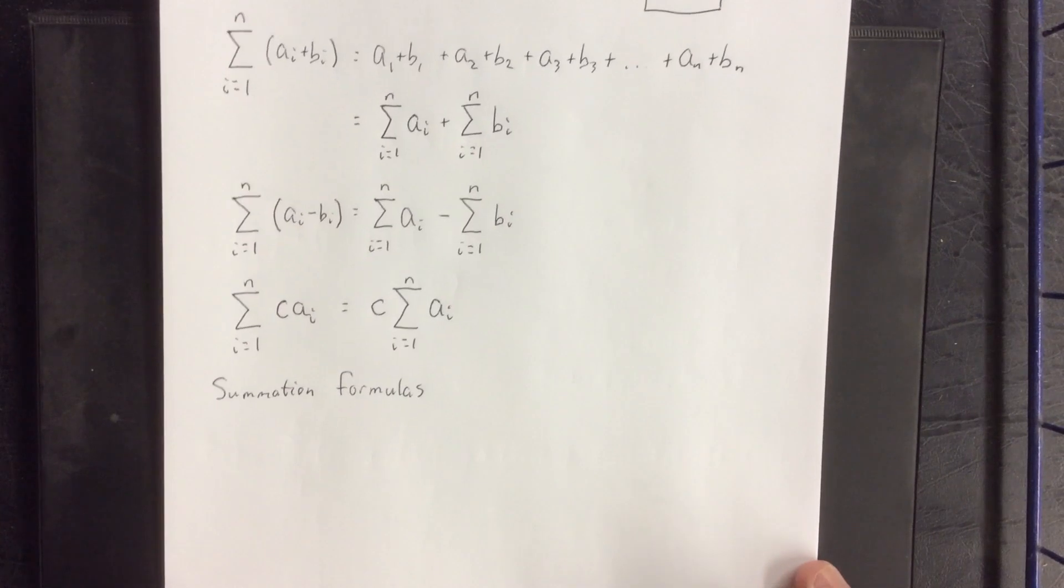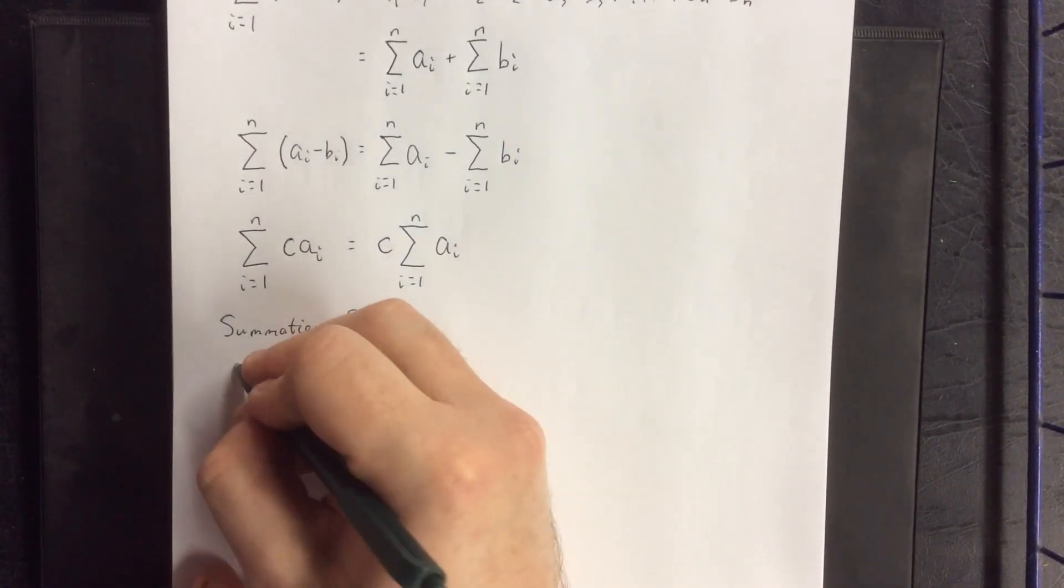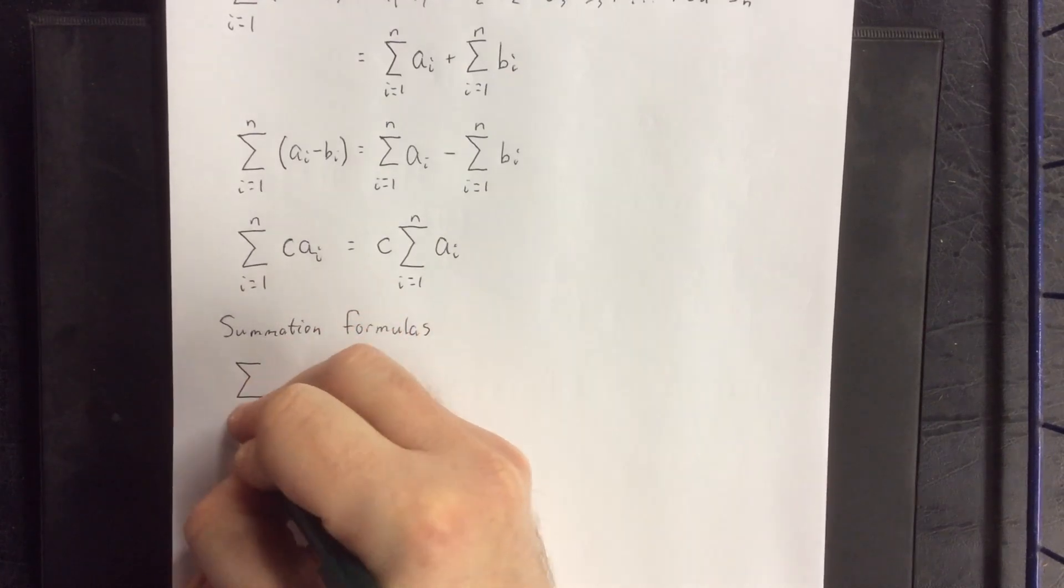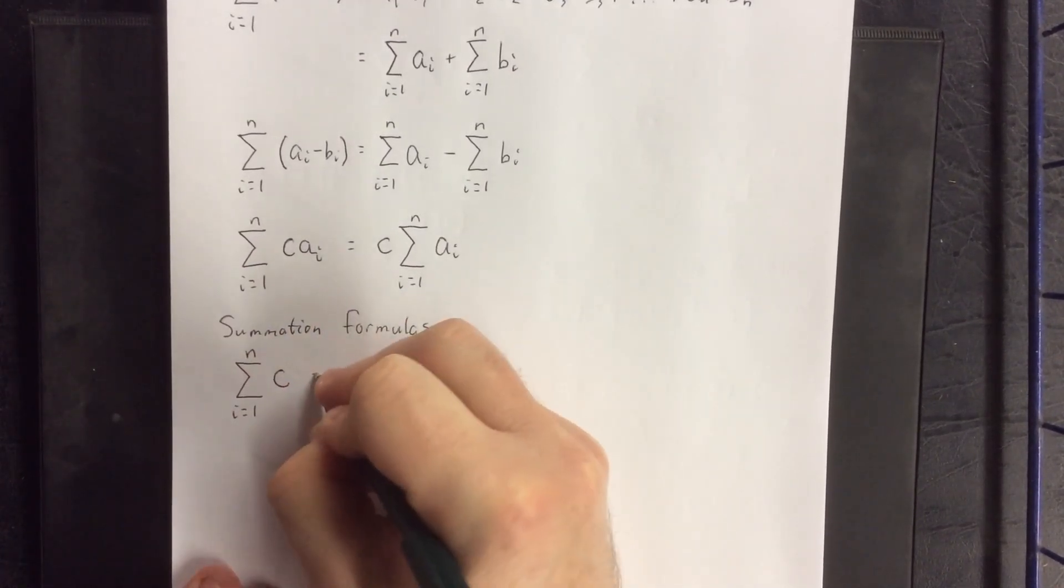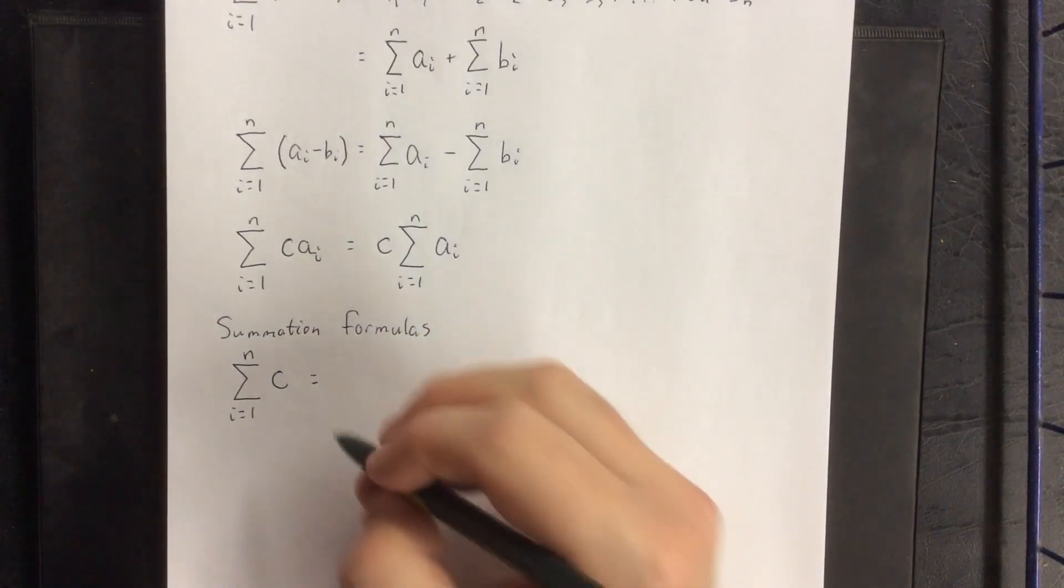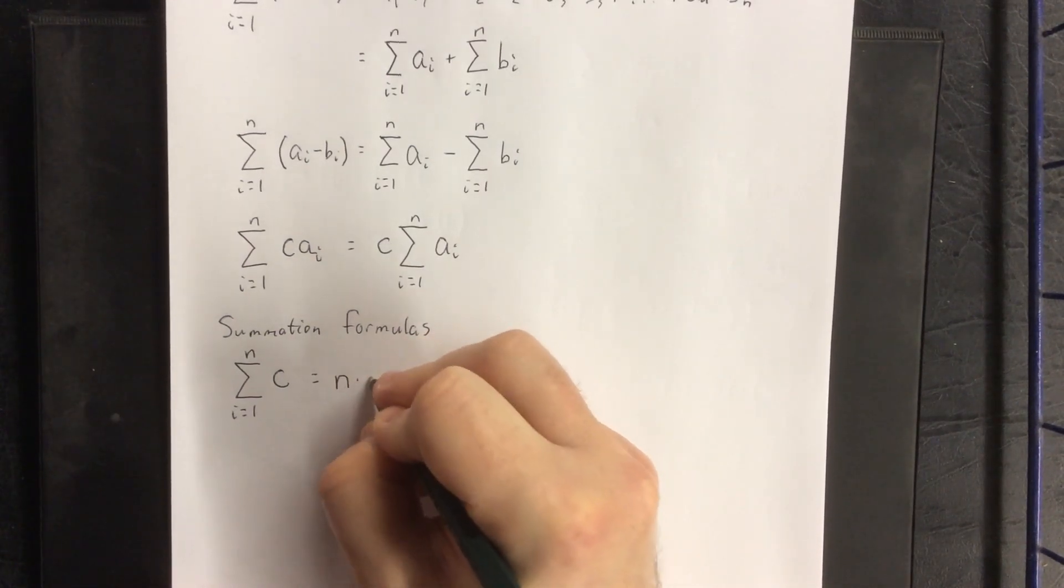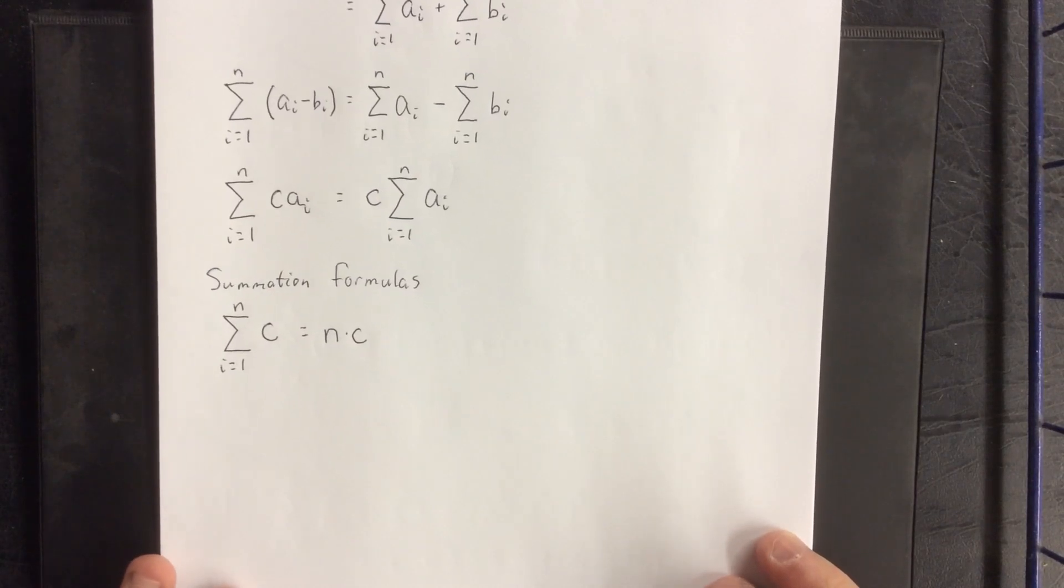Now, there are a couple of summation formulas that you will need to know as well. These summation formulas are the following. If you take a constant and add it to itself a total of n times, then what you have there is the definition of multiplication. Once you add something to itself n times, that would be the product of n and whatever the constant happened to be.